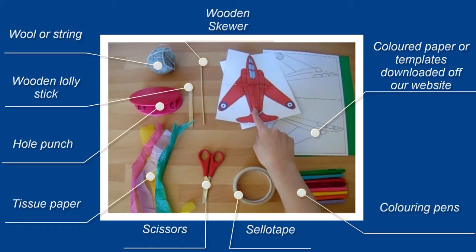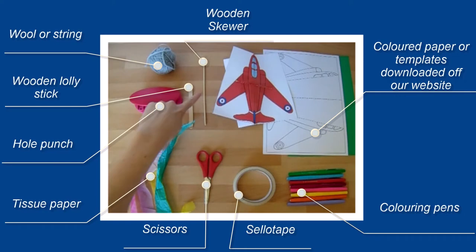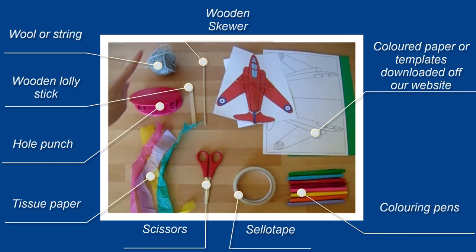We've got a colored version of our Red Arrow and a black and white version. You then also might like some colors. You'll need some sellotape and some scissors, a wooden skewer, a lollipop stick, some wool or string, a hole punch, and some colored tissue paper to make your tassels.